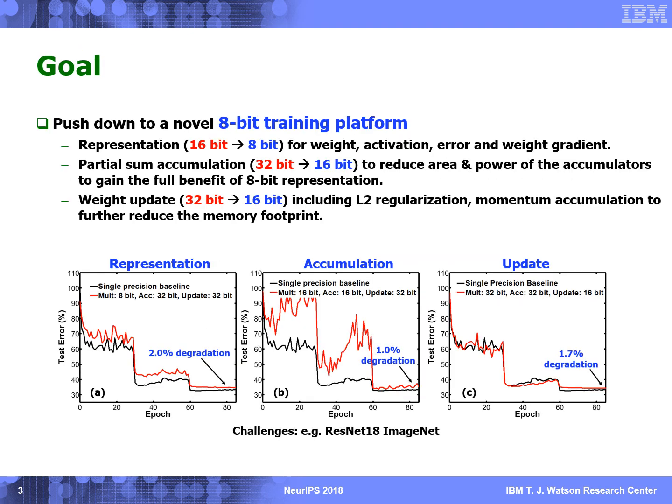In this paper, we want to keep reducing precision down to an 8-bit DNN training platform. Specifically, we aim to reduce the representation precision from 16-bit down to 8-bit, and reduce the accumulation bit and weight update down to 16-bit to further reduce the hardware area and memory footprint. Without introducing new techniques, reducing any of the three precisions will cause significant degradation. In the following presentation, we will introduce new techniques that can fully overcome all these challenges.